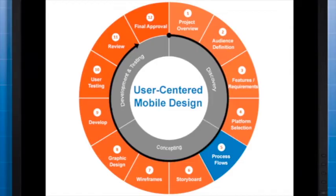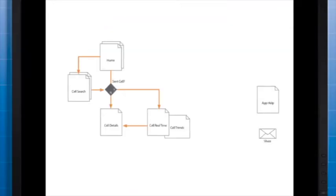There are also a number of differences between the visualizations and interactions available on tablets versus phones. Process flows usually start with a series of blank rectangles, one for each screen of the app, and then show the flow through each screen to accomplish primary tasks. At this point, you don't want to worry about specific controls or visualizations, but you do want to address the broad picture: what screens are needed, what is the purpose of each screen, and what content should be included.